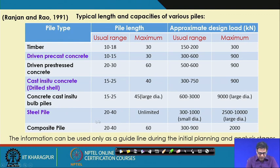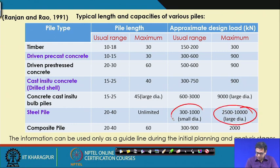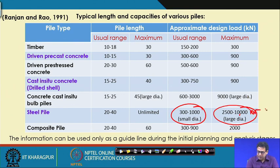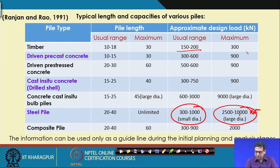Steel piles can take a higher load for larger or smaller diameter — up to 10,000 kilo Newton. Timber piles can take up to 150 to 250 kilo Newton in the usual range, with a maximum of 300 kilo Newton.